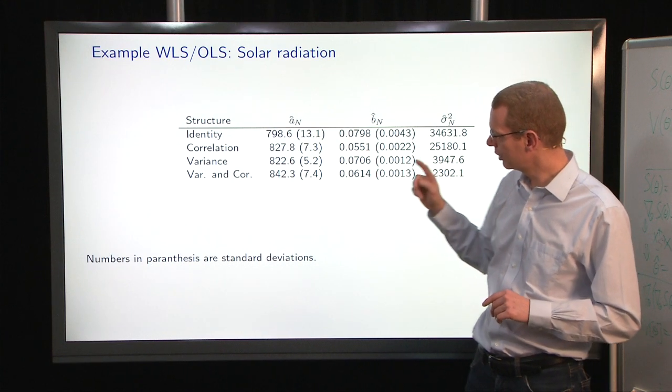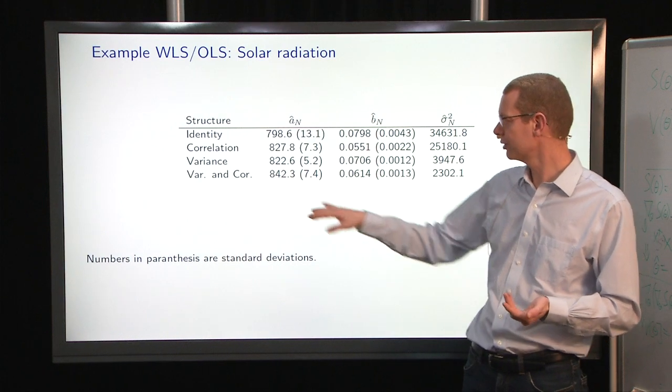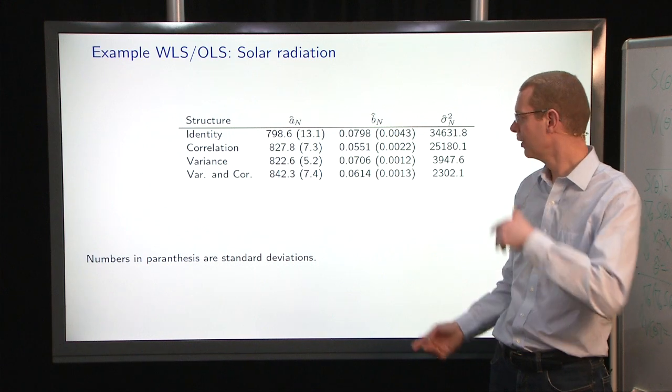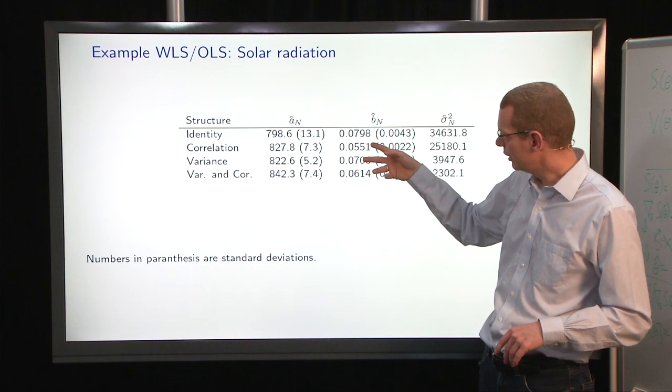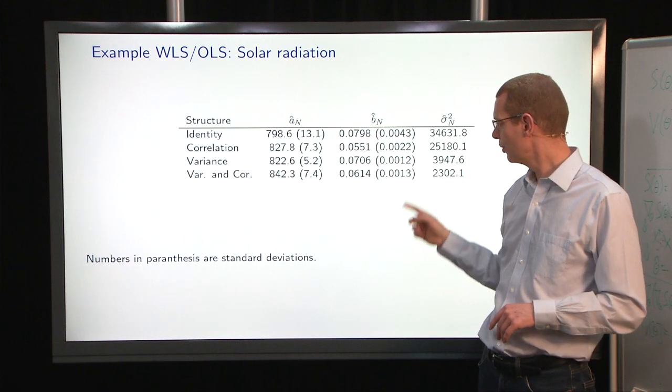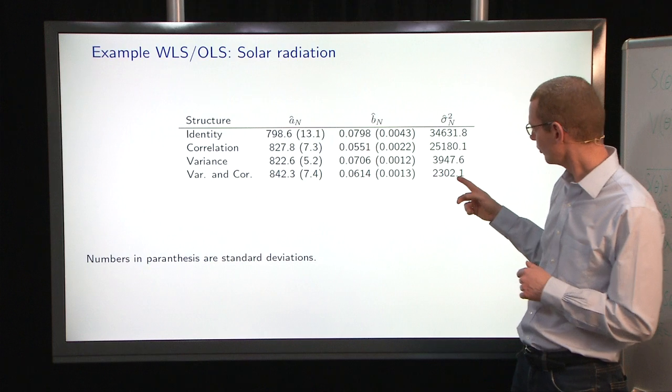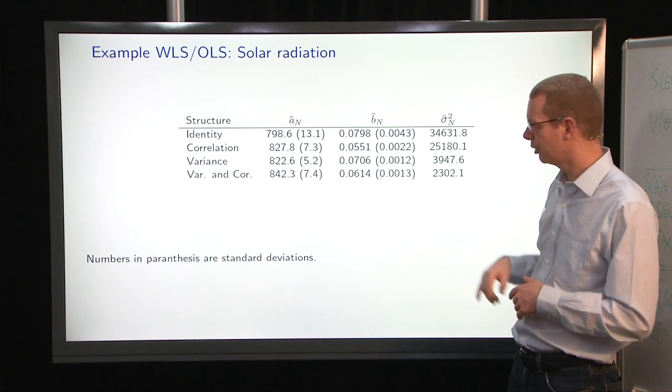And then if you combine these two structures and have both the variance structure and the correlation structure, then we get an even higher estimate of the level, and then we get an intermediate of these two estimate of the slope. Again, the uncertainty on that remains small, and the variance structure out here, the estimated variance becomes even smaller.